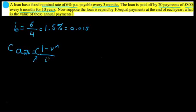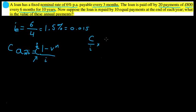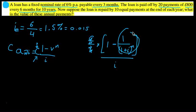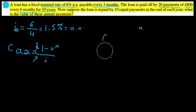What we need to do is calculate the value of the loan first, then go backwards to find C. I prefer to look at the annuity formula as C over i, times (1 minus 1 over (1 plus i) to the power of n). It's the exact same thing — just rearranged, with C factored out.